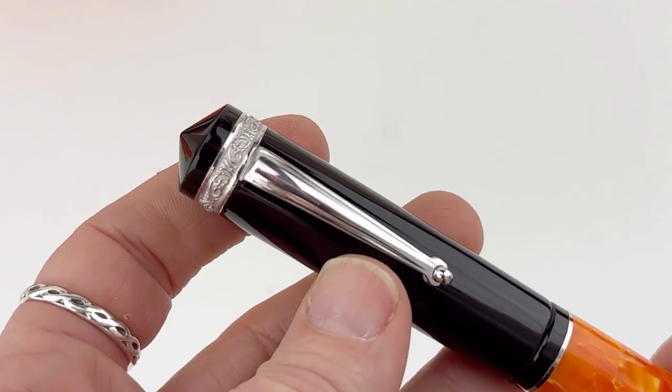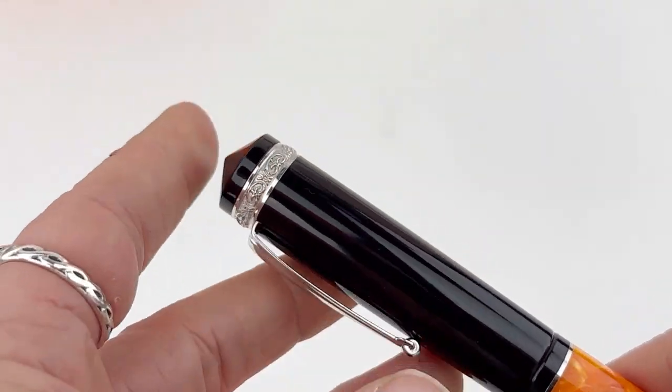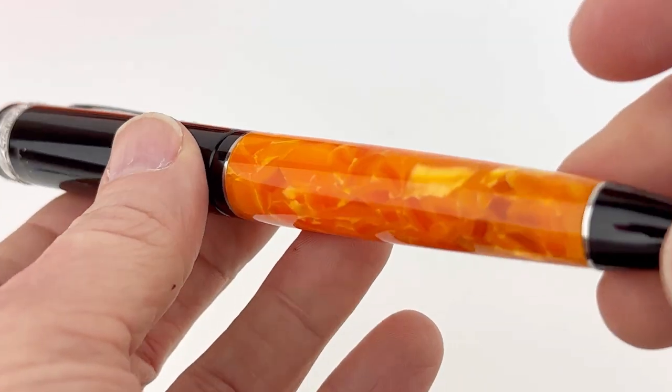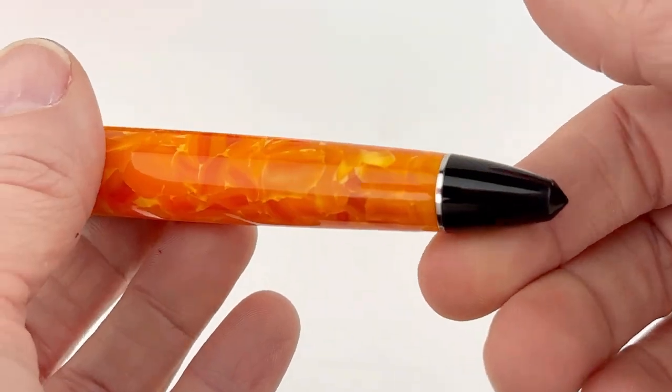Let's take a look at this pen. This is the Delta Right Balance Dulce Vita fountain pen. You can see they've got that vivid orange resin barrel paired with the solid black resin cap, and the blind cap at the back is also black solid resin. They topped it off with silver trims.